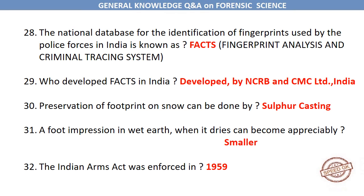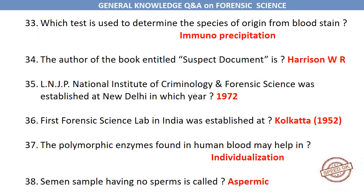A foot impression in wet earth when it dries can become appreciably smaller. The Indian Arms Act was enforced in 1959. Which test is used to determine the species of origin from a bloodstain? Immunoprecipitation. The author of the book entitled 'Suspect Documents' is Harrison W.R. The LNJP National Institute of Criminology and Forensic Science was established at New Delhi in 1972.